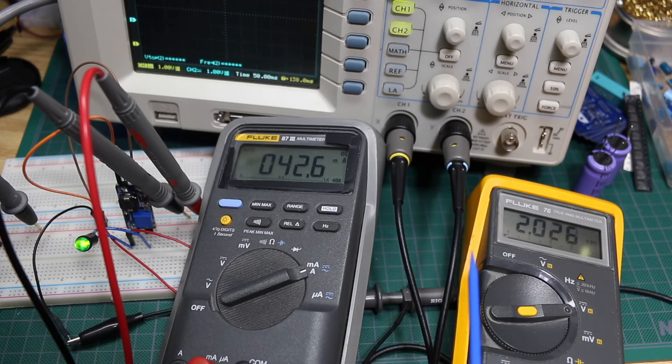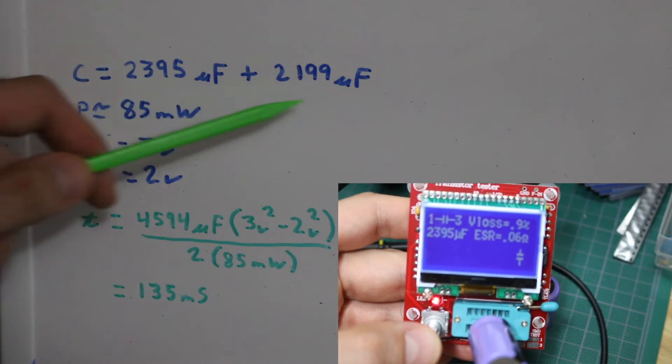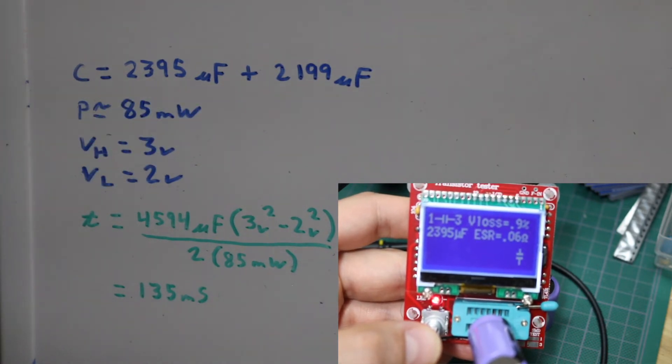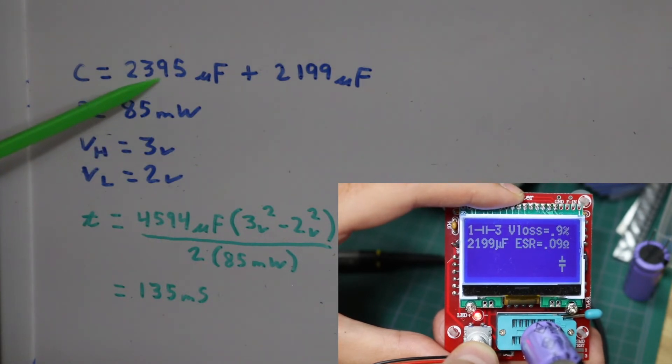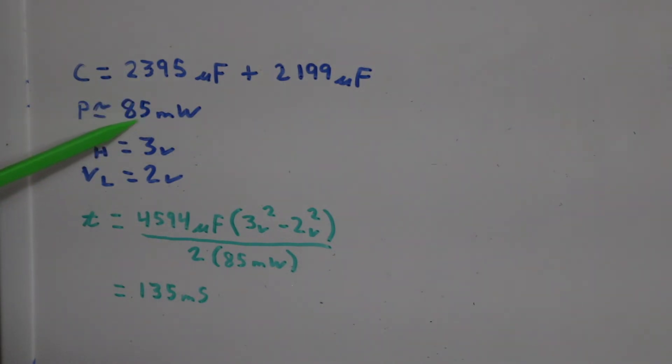So the efficiency, power out over power in is about 87%. Using my two specific capacitors, now I can calculate the holdup time, knowing that the holdup capacitors need to deliver 85 milliwatts average into the boost converter to continue powering the LED.